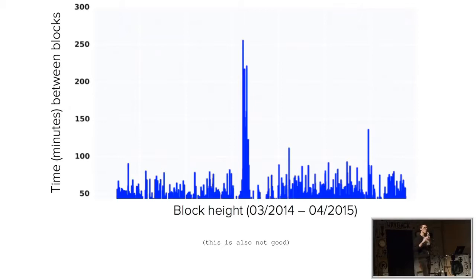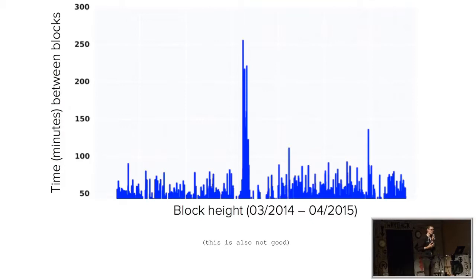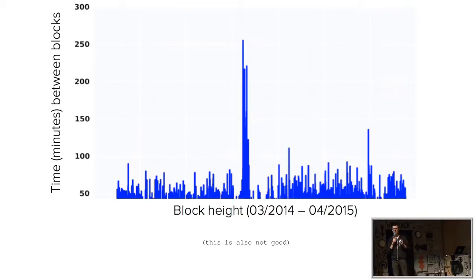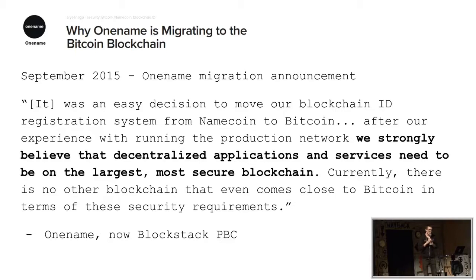These weren't even normal user nodes — these were the miner nodes, the people burning electricity to earn money and make the system work. The people who should have the most uptime were experiencing 250-minute delays. This was a serious problem for One Name's users, who filed support tickets asking why things were taking so long. They decided they had two options: take over Namecoin development themselves, or move to a more reliable blockchain.